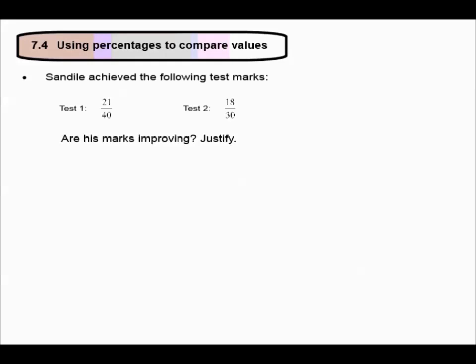Sandili achieved the following test marks, 21 out of 40 and 18 out of 30. Are his marks improving? It's very difficult to see from these values. So a good way of having a look at improvement or decrease in marks is by changing these values to a percentage.